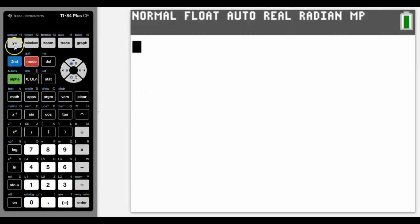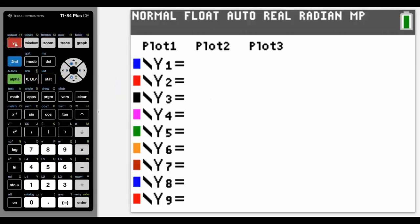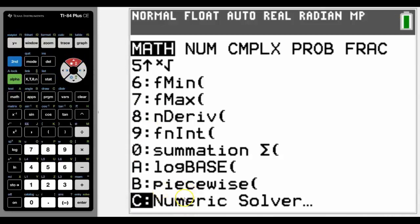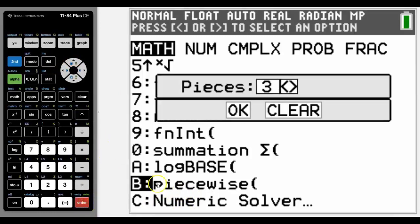To enter a piecewise function in the graphing screen, we go into Y equals and then we're going to go into Math. The reason it's easy to miss the piecewise opportunity is it's down at the very bottom. So I've scrolled up to get to the bottom quicker, and it's B, which is piecewise.